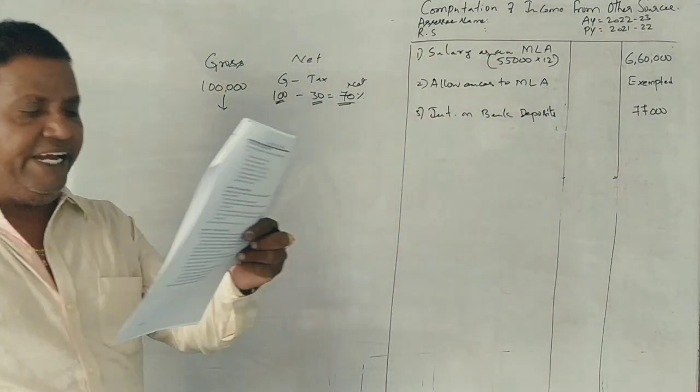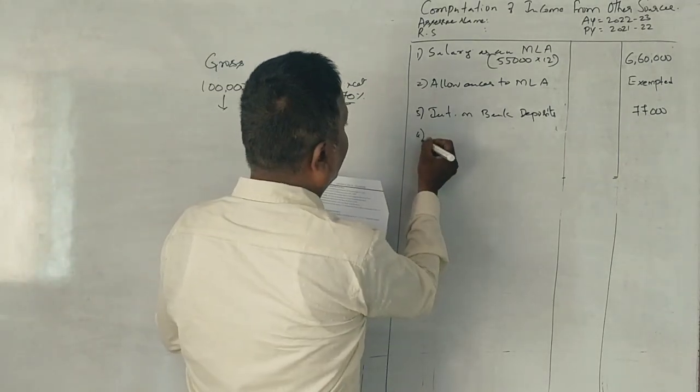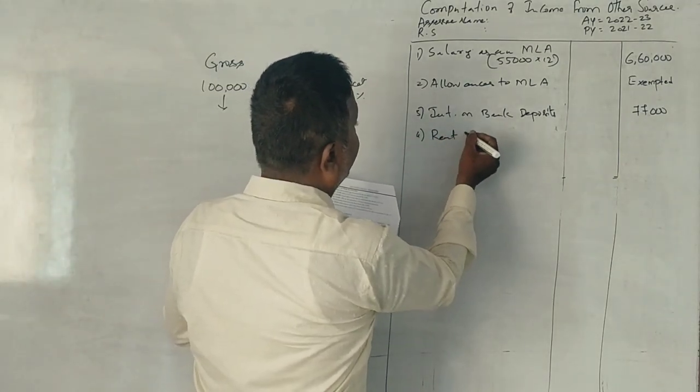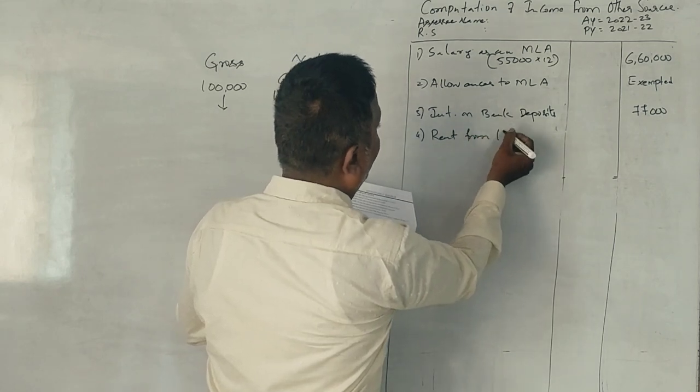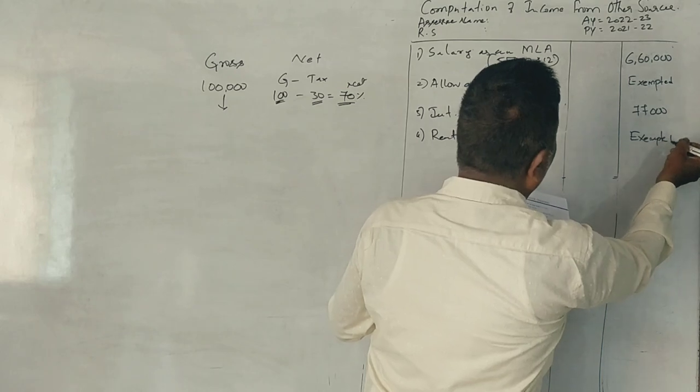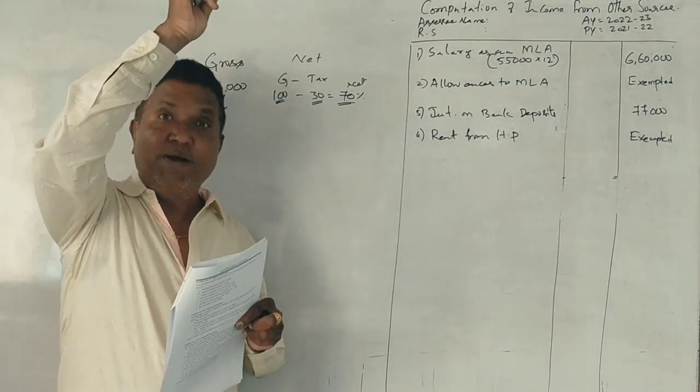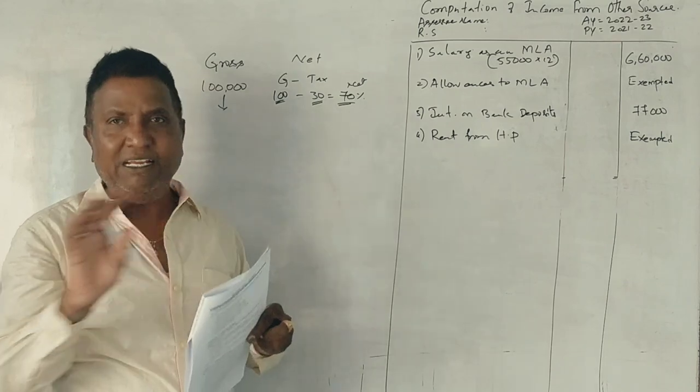Next point is rent from house property in Bangalore. Tax monthly? Yes, sir. 24,000. Rent from house property. It is exempted here because it is taxable under the head income from house property. Income from house property is taxable in the tax model.